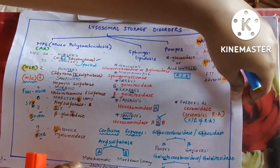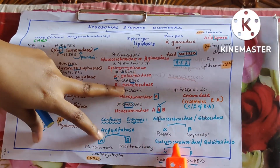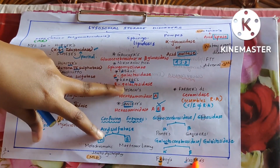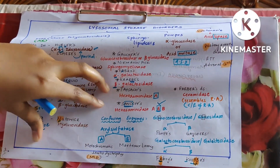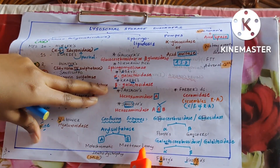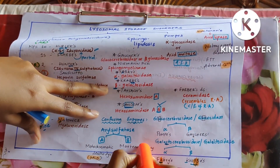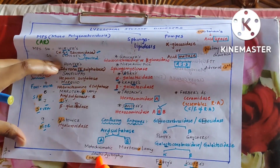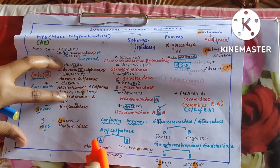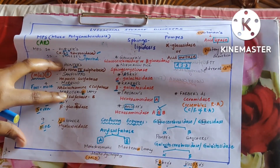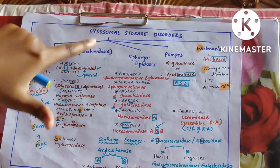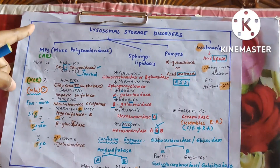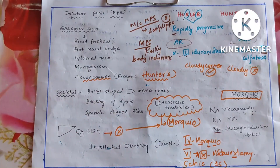Galactosidase or galactocerebrosidase has no U, so Gaucher's does not come here — here comes Fabry's and Krabbe's. Krabbe's has two B's so beta; Fabry's has only one A so alpha. Arylsulfatase A and B: B is for Moroteaux-Lamy (sixth), whereas A is for metachromatic leukodystrophy (MLD). MLD also comes under lysosomal storage disorders — MLD is due to arylsulfatase A deficiency, whereas Moroteaux-Lamy is arylsulfatase B.